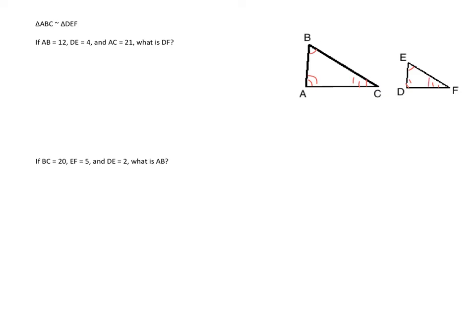So what we're trying to do here is figure out, we know the length of AB is 12, we know the length of DE is 4, and we know the length of AC is 21, so we're trying to find this length, DF.